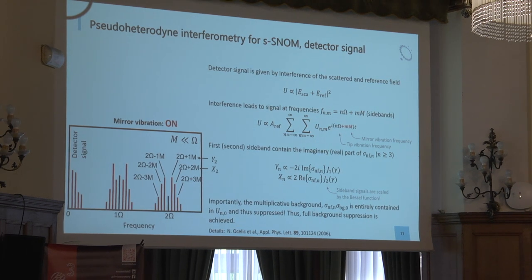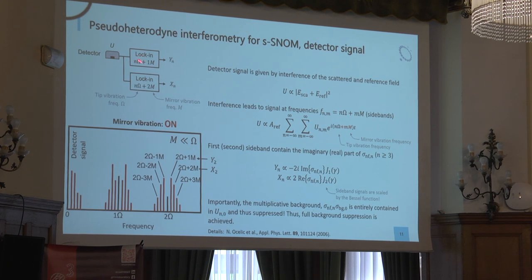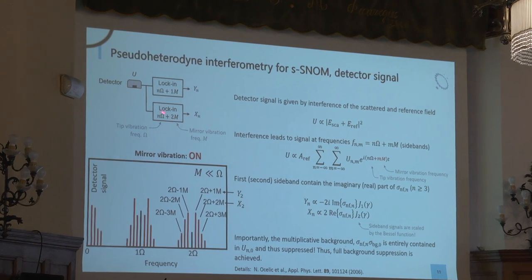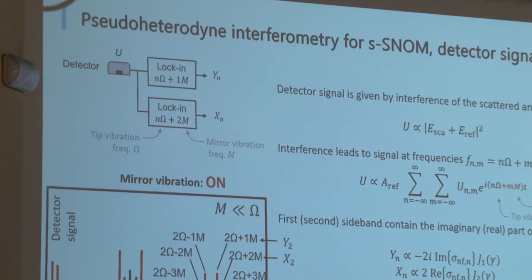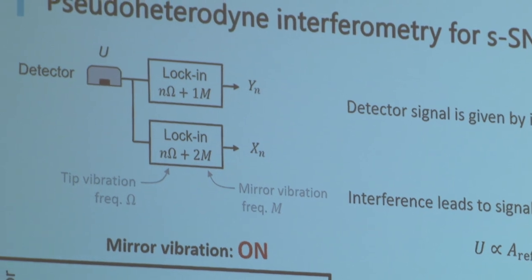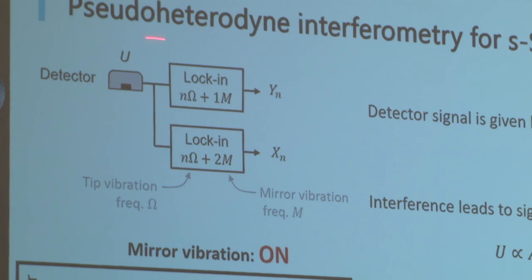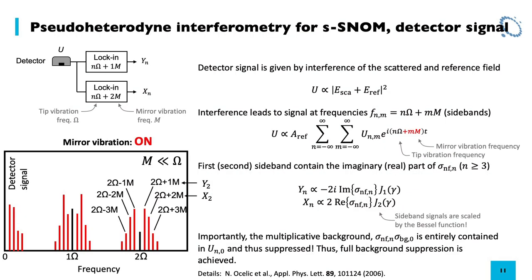How is this detected in an experiment? In your microscope you have one lock-in tuned to one frequency giving you the Y, and another lock-in amplifier detecting at a different frequency giving you the X. Today we use digitizer cards and it is implemented in software, so there are no physical lock-in units outside your SNOM. But this is what happens internally — we get Y and X, and with that we can in principle determine our near-field scattering.